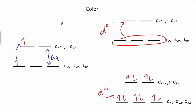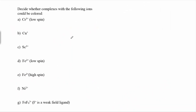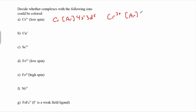Let's look at a question: decide whether complexes with the following ions would be colored. We just need to check that they aren't d0 or d10. For chromium 3+, chromium is [Ar] 4s¹ 3d⁵, so Cr³⁺ is [Ar] 3d³. Since it's not d0 or d10 — it has d electrons but not a complete set — we do expect it to probably be colored.